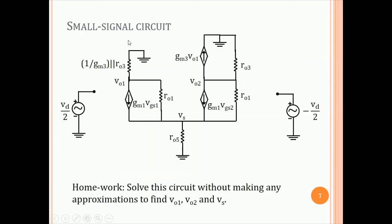So, let us draw the small signal circuit. This is a small signal circuit for M1, Gm1, Vgs1, RO1, Gm2, Vgs2, RO1, RO3, Gm3, VO1. And this is 1 by Gm3 parallel RO3. And we keep the RO5 because the circuit is not symmetric. We do not make the assumption of Vs equal to 0.